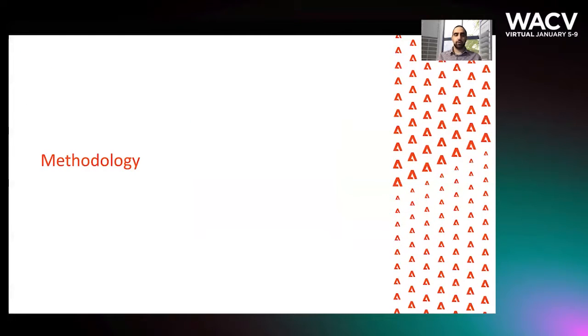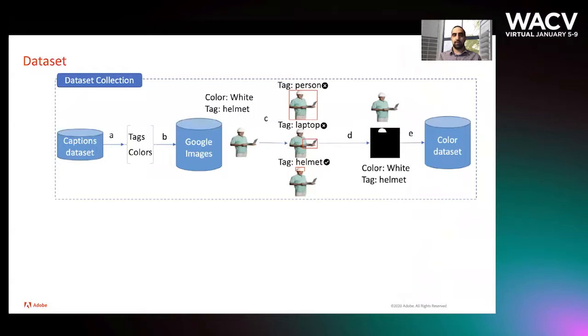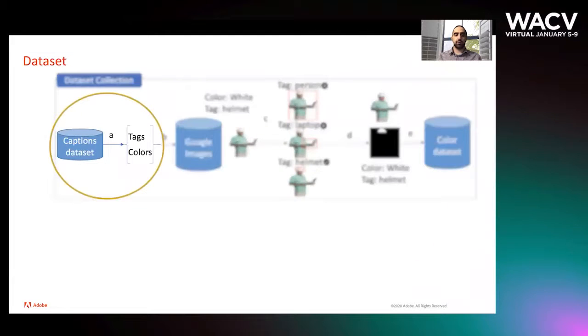So how do we do this? First of all we need a dataset containing color information. To do that we start from a set of tags and a set of colors. This could be coming from pre-processing a captions dataset or we can have predefined sets like a set of colors: blue, green, red, etc.